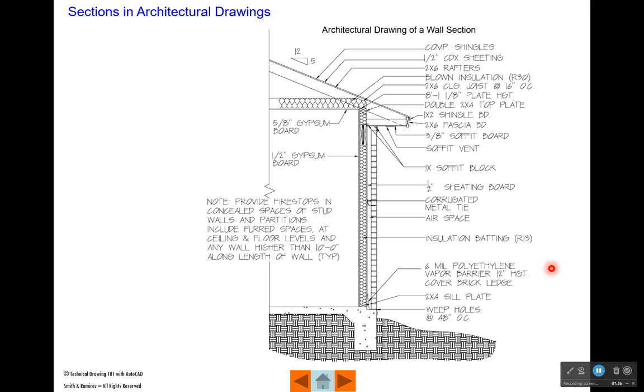Here's an example of an architectural section. This is actually a wall section. You can see the roof coming down and the wall. This outside art represents a brick layer. This is insulation, that honeycomb pattern on the inside. Down here we see the concrete foundation, and this pattern represents the earth.